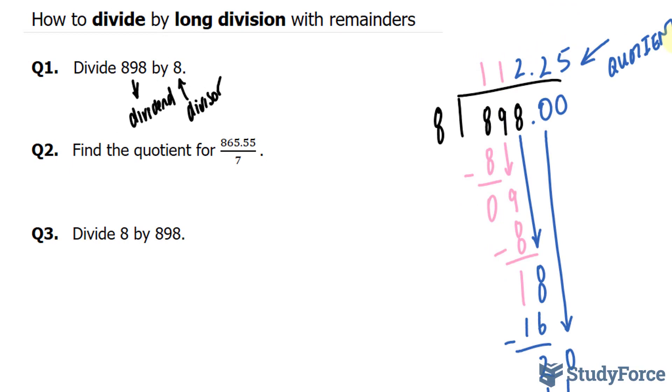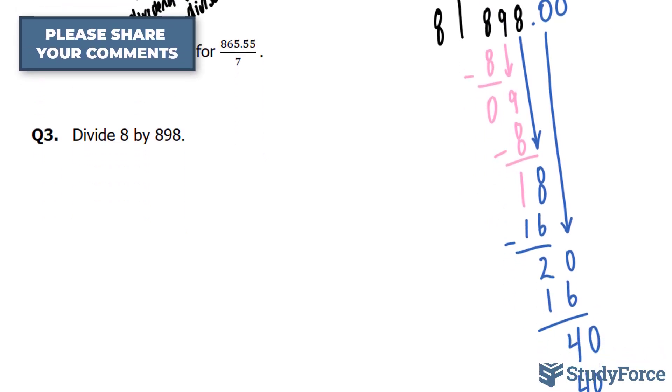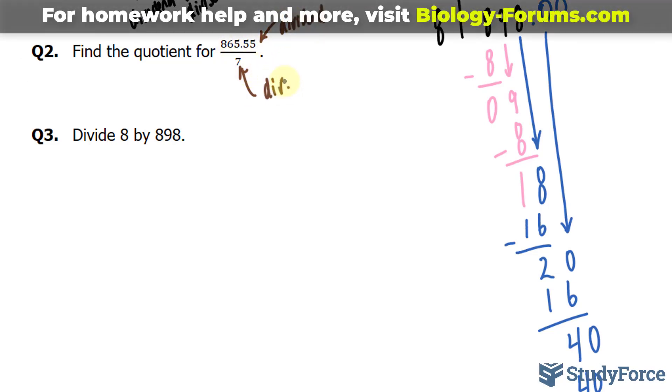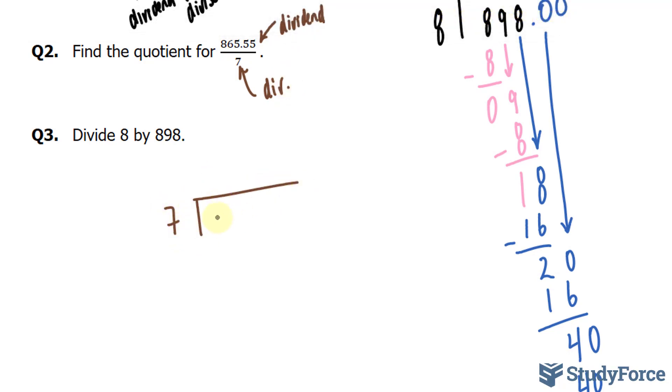Let's move on to question number 2. The question reads, find the quotient for 865.55 over 7. Our divisor here is 7, and our dividend is 865.55. Let's go ahead and set this up like we did in question 1.